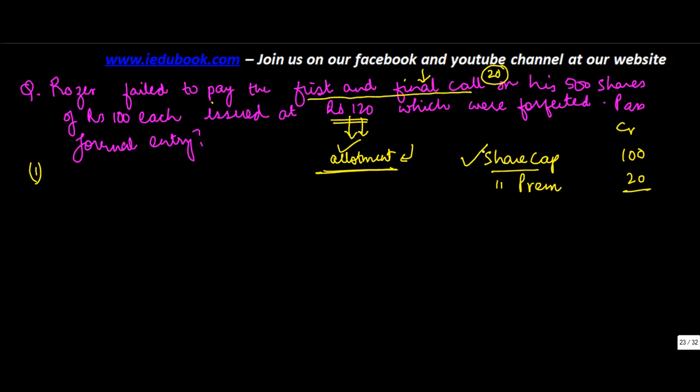So as you journalize it, since you call for the entire amount, we assume that this money has been credited to the share capital account. So I will credit the share capital account and the amount will be 500 shares into face value of shares. Now what is the money that I have not received from him?